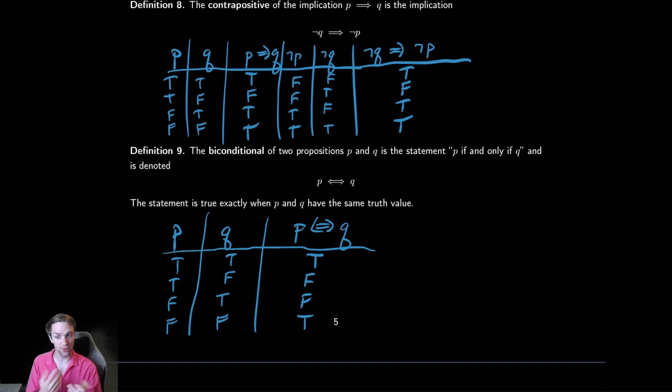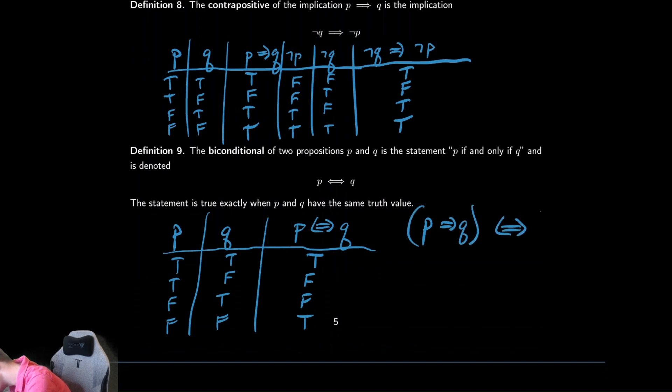As an example of where the symbol shows up, it's often just used to say that two things are exactly the same. So you might say something like, p implies q is logically equivalent to not q implies not p. Which is what we showed above with the contrapositive. That is an official statement that the contrapositive is logically equivalent to the original implication. This is the way to say these two things are exactly the same. You can think of it like an equal sign, and it behaves exactly the same as you might expect like an equal sign.